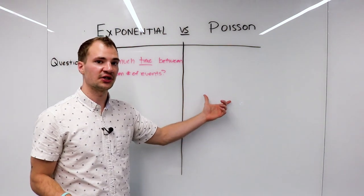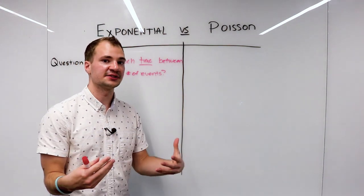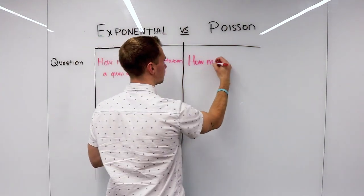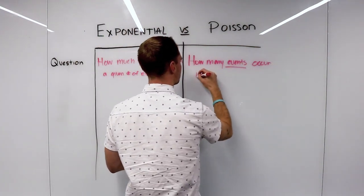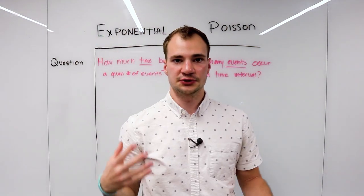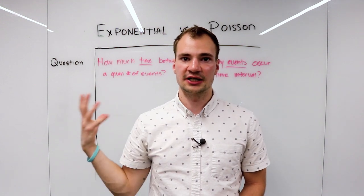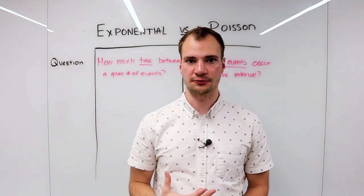Now this is where we can really see the relationship between the exponential and the Poisson. The question the Poisson answers is: how many events will occur in a fixed time interval? Now, as usual, asking the question allows us to figure out what the random variable represents.